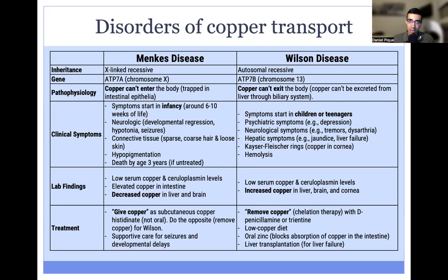Menke's disease is much more severe than Wilson disease and tends to start in the infantile period, usually around the first few months of life. It can present with neurologic symptoms like regression, hypotonia, and seizures. Connective tissues can also be involved, so you tend to see sparse, coarse hair and loose skin. Patients can also have hypopigmentation due to the deficiency of tyrosinase from copper deficiency. If left untreated, patients often die as toddlers, if not earlier, because the disease is so severe.